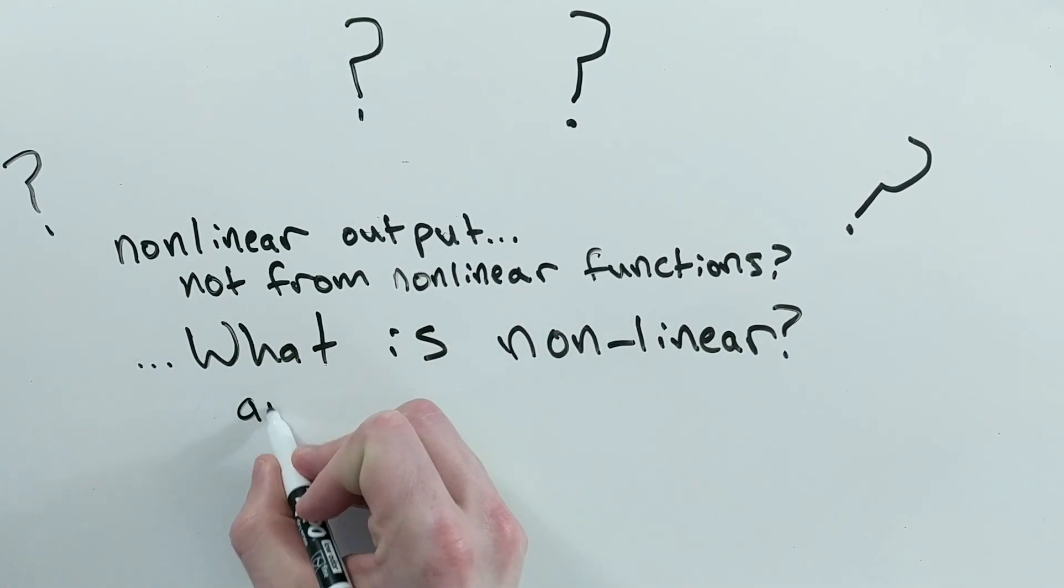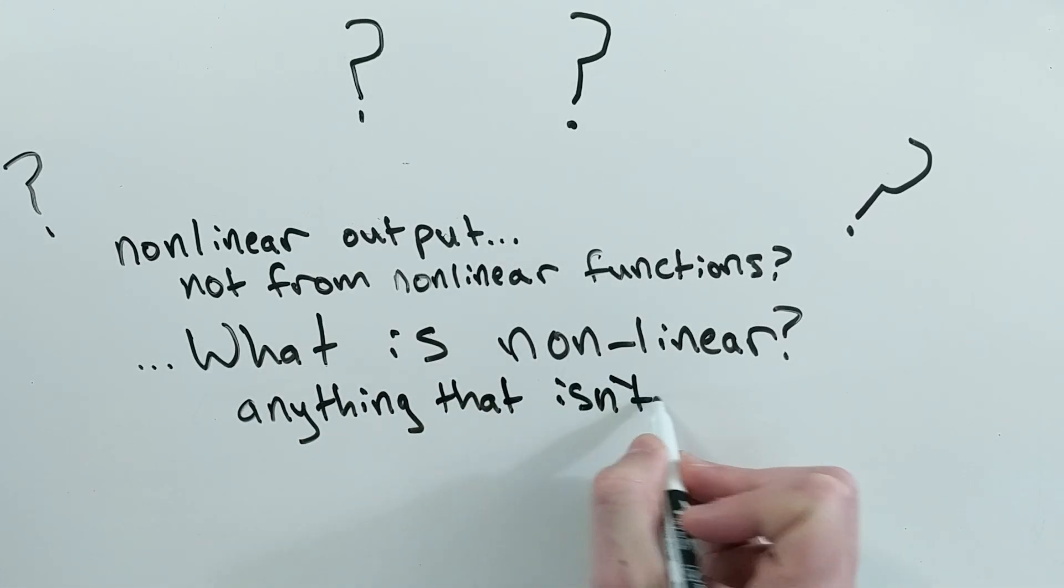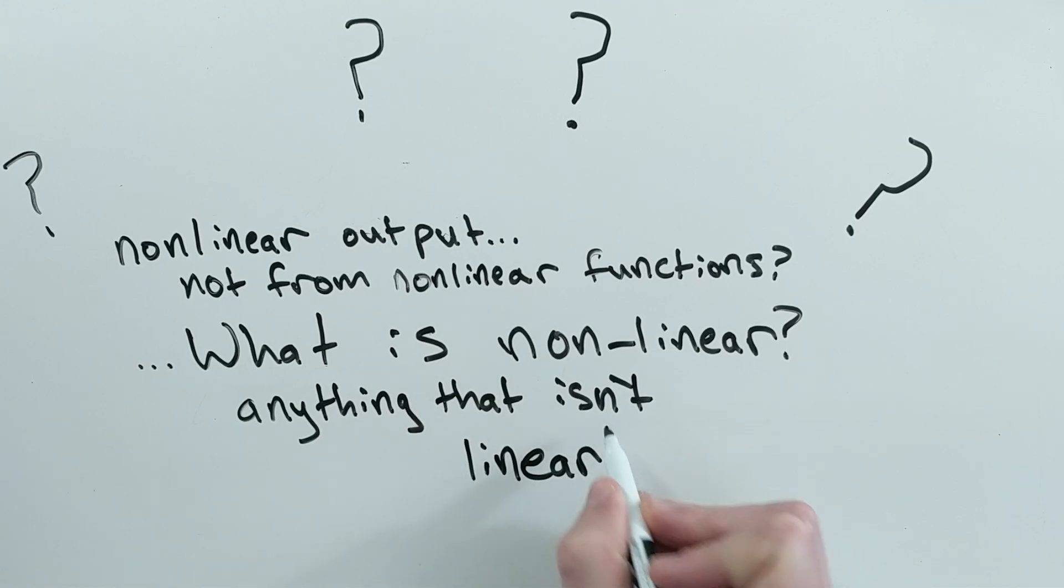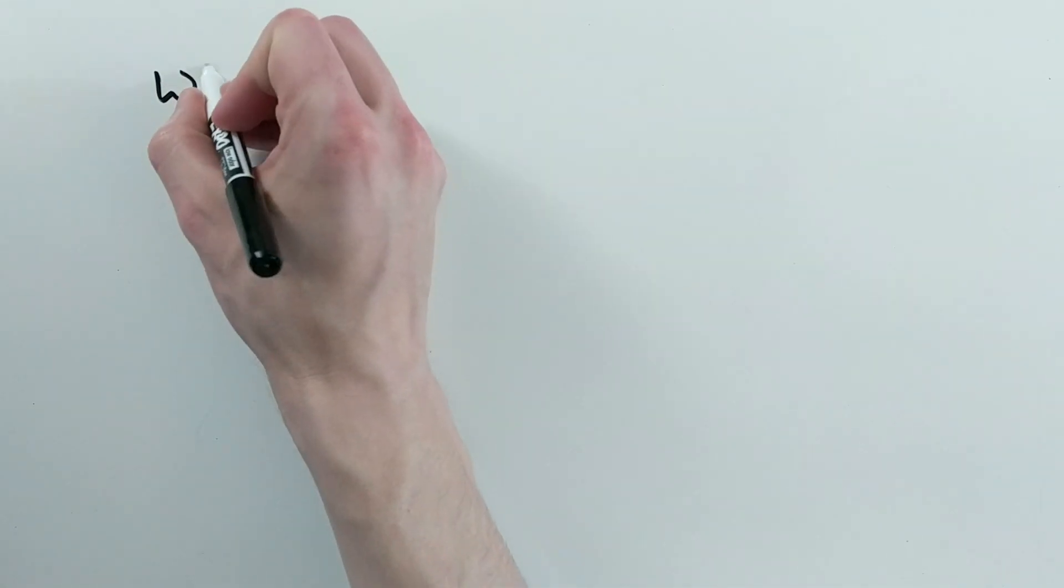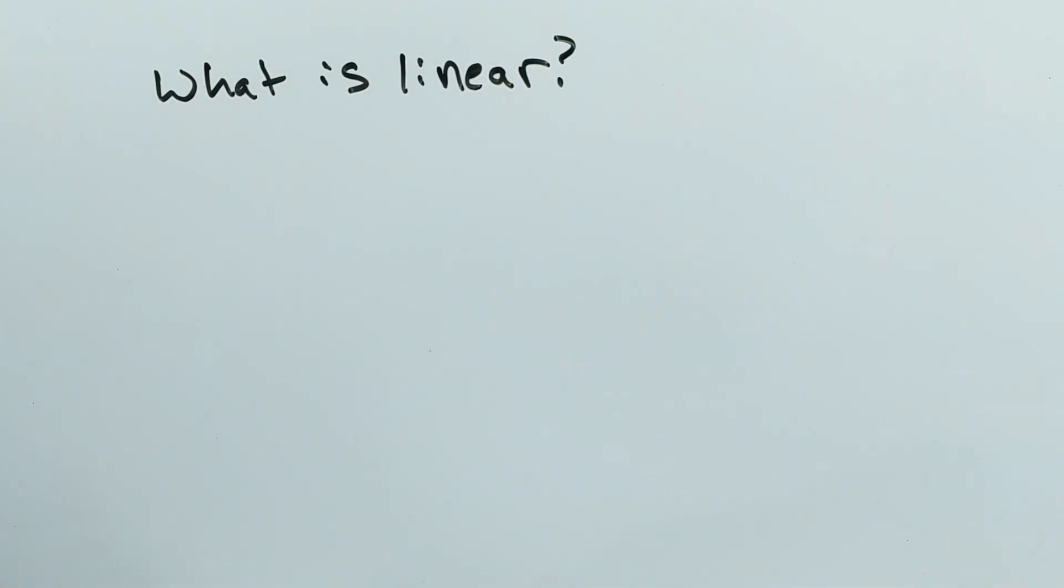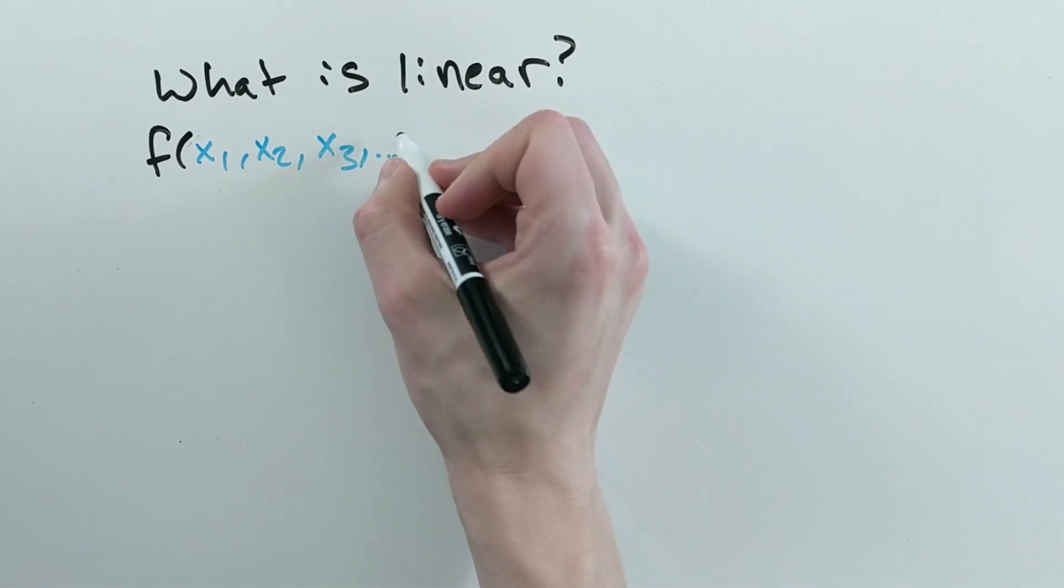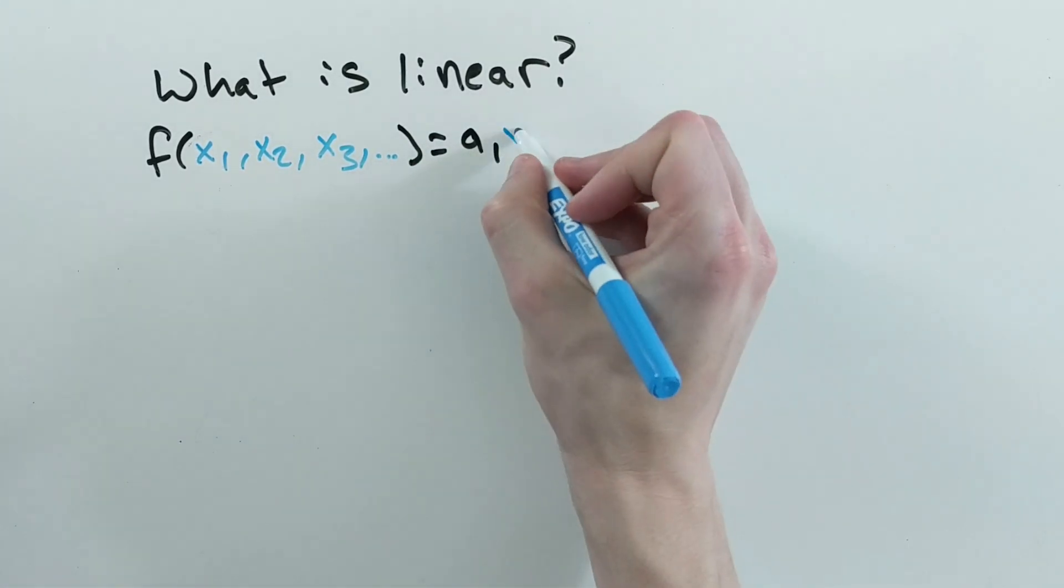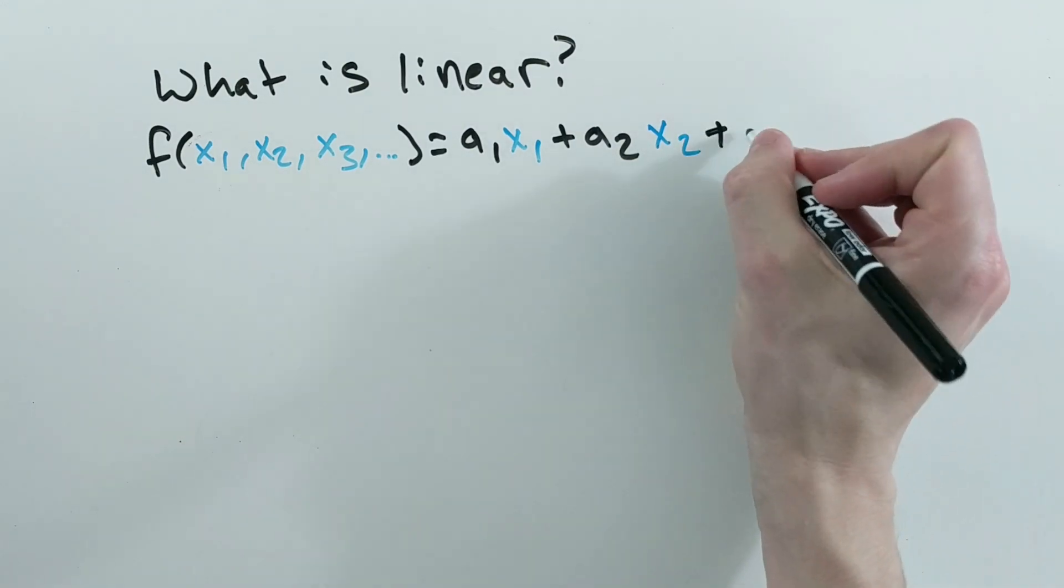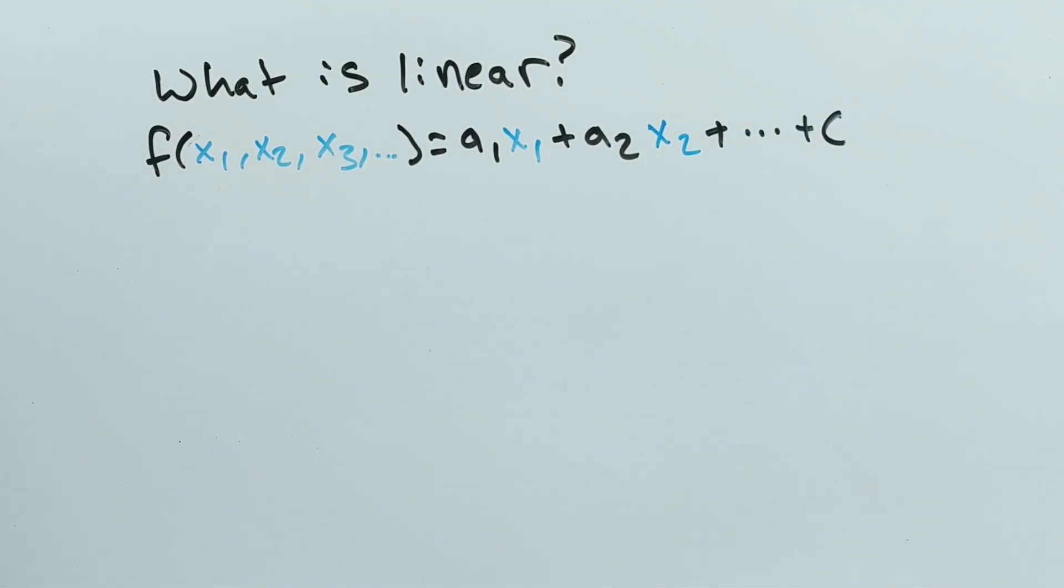A non-linear transformation is anything that can't be written as the sum of all the inputs times some constants. That is, f of x, x2, x3 is linear if and only if it can be written as f of x, x2, x3 equals a1 x plus a2 x2 plus a3 x3 dot dot dot plus c where c is just some constant.